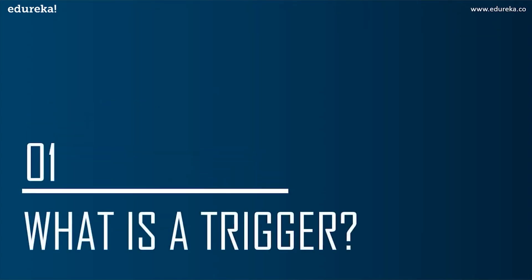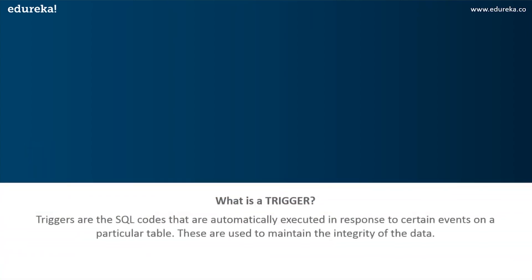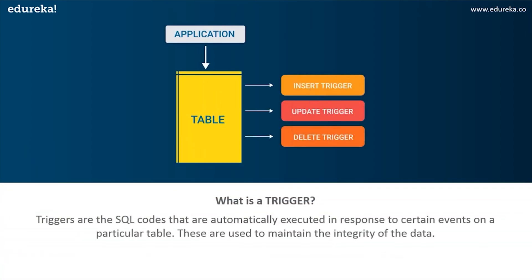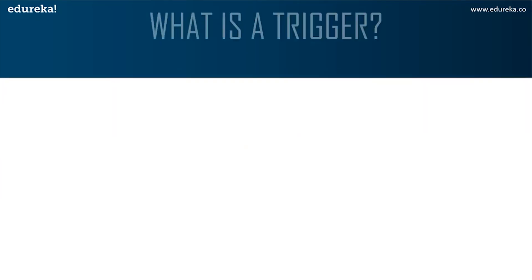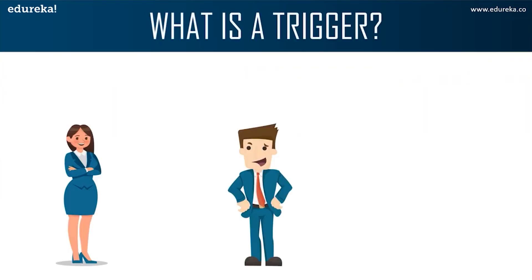The first topic in today's discussion is: what are triggers? Triggers are SQL code that are automatically executed in response to certain events on a particular table. These are used to maintain the integrity of the data in a given table. A trigger in SQL works similar to a real-world trigger.